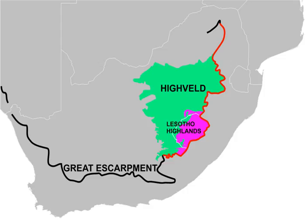The Hivelde is the portion of the South African Inland Plateau which has an altitude above roughly 1,500 metres, but below 2,100 metres, thus excluding the Lesotho mountain regions to the south-east of the Hivelde. It is home to some of the country's most important commercial farming areas, as well as its largest concentration of metropolitan centres, especially the Gauding Conurbation, which accommodates one-third of South Africa's population.